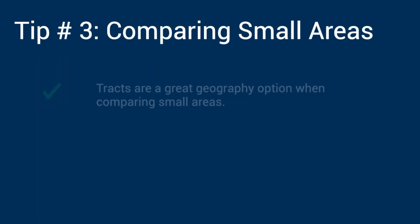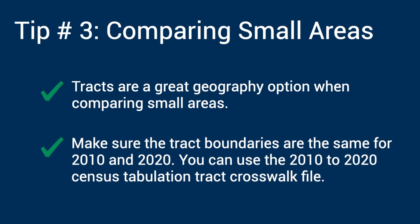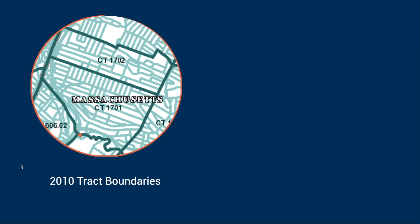Tip number 3: if you want to compare data over time for small areas, the census tract is a great geographic area. However, you also must make sure that the boundaries of the tracts that you are comparing remain the same between 2010 and 2020. Between censuses, the Census Bureau reviews the boundaries of the tracts to make sure that the population remains within the threshold of 1,200 to 8,000 people, with an optimum size of approximately 4,000 people.